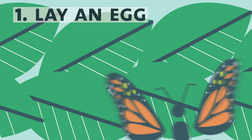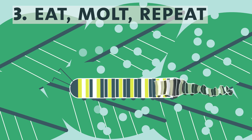How do you make a butterfly? First, a butterfly lays an egg on a plant. A caterpillar hatches out of it and gets busy eating. As it eats, it grows and molts out of its skin to get even bigger, and repeats this until it is a fully grown caterpillar.